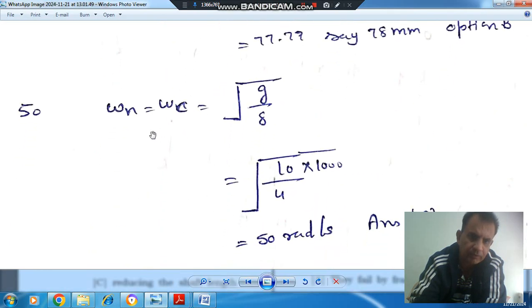So here we know that the critical speed equals natural frequency, that is equal to root g by delta. Now delta, g is 10, so delta is 4 mm or 4 by 1000 meter. So it comes out as 50 radians per second, which is option A.